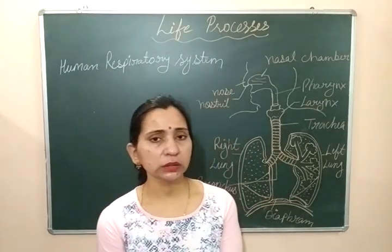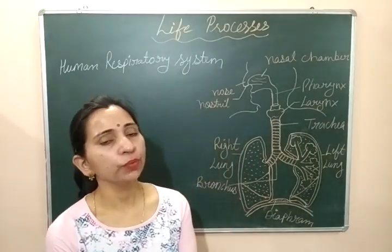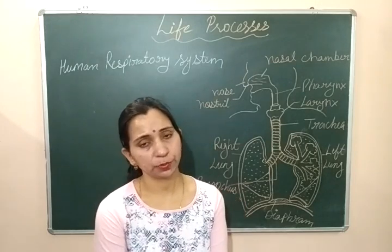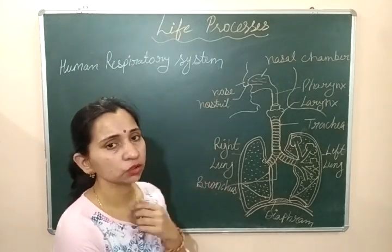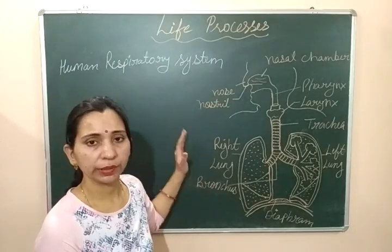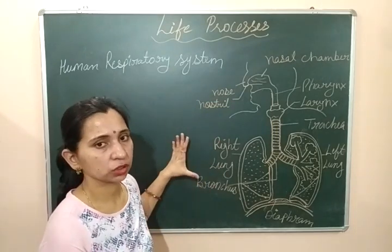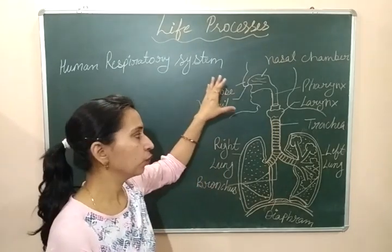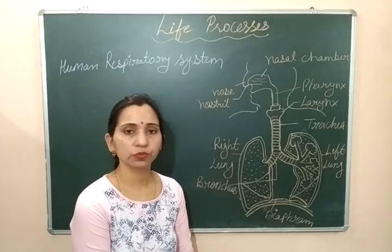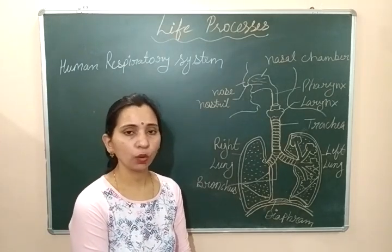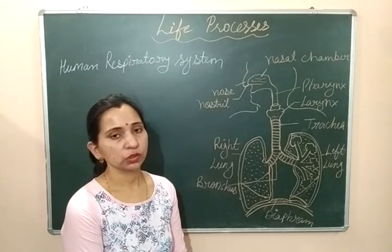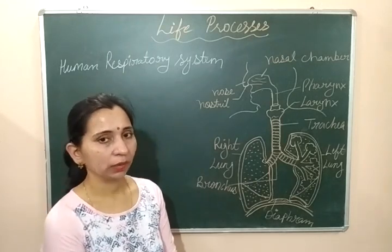Now we will discuss about the human respiratory system and the process of respiration — how it takes place in the case of humans. This is the diagram of the human respiratory system. Let's take one by one all the parts of the respiratory system and then we will discuss how air comes inside and how the process of respiration takes place.